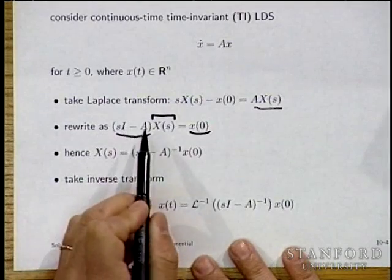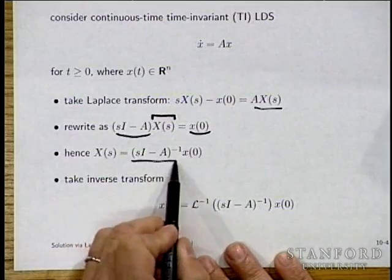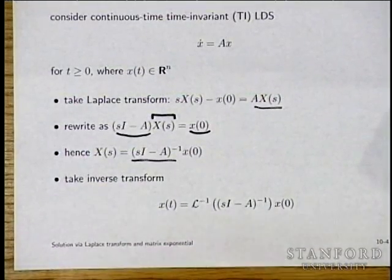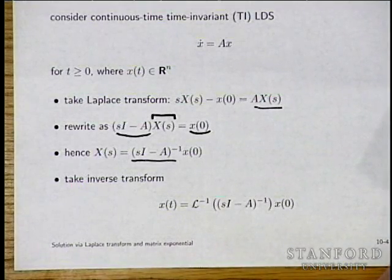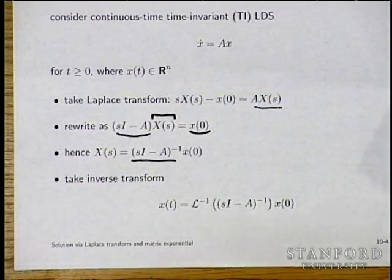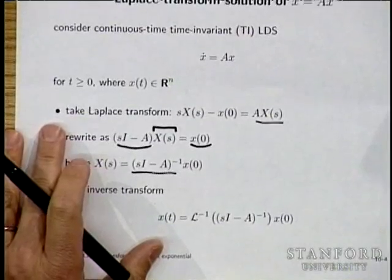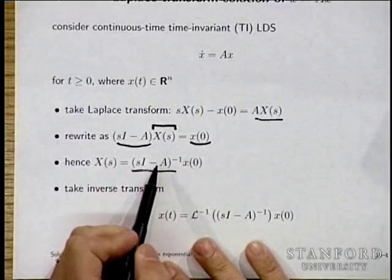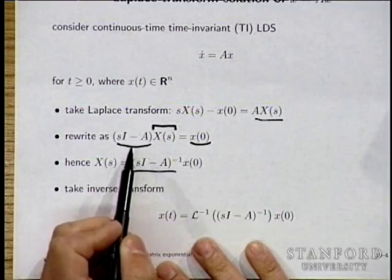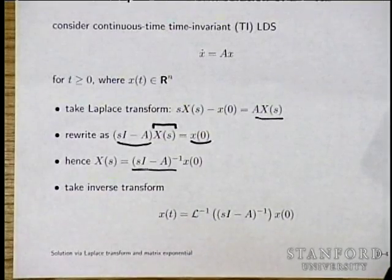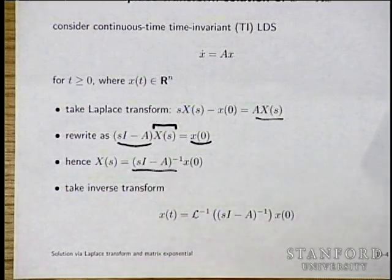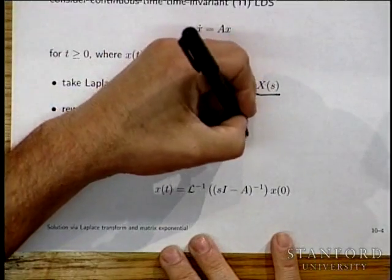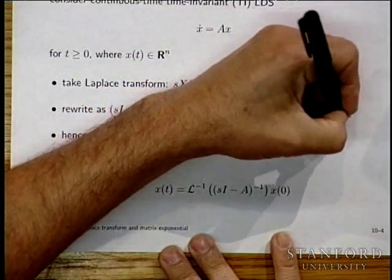At least formally, X of S is the inverse of (SI minus A) times X of zero. We're going to talk a lot about this matrix. You can't just casually write the inverse of a non-square matrix — the matrix police would object. However, SI minus A can fail to be invertible. It turns out SI minus A is invertible for almost all complex numbers except a handful. For the moment, let's say this is for S where SI minus A is invertible.